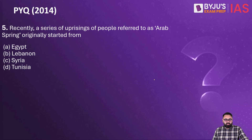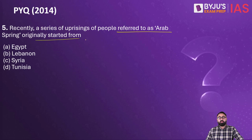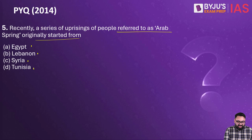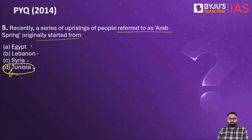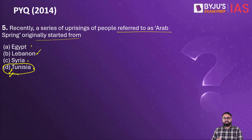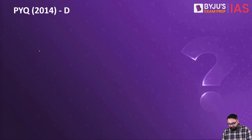Next is a previous year question from 2014. Recently, a series of uprisings referred to as Arab Spring originally started from — which country? Arab Spring became very famous over 10 years back. It was an overthrow of many dictator governments in the Middle East and North Africa, involving countries like Egypt, Lebanon, Syria and Tunisia. The answer is Tunisia — it started with Tunisia and then spread to other parts of the world including Egypt and Lebanon. Since then, many countries have been politically unstable without a stable government, such as Lebanon and Syria, which is still unstable. The answer is D.